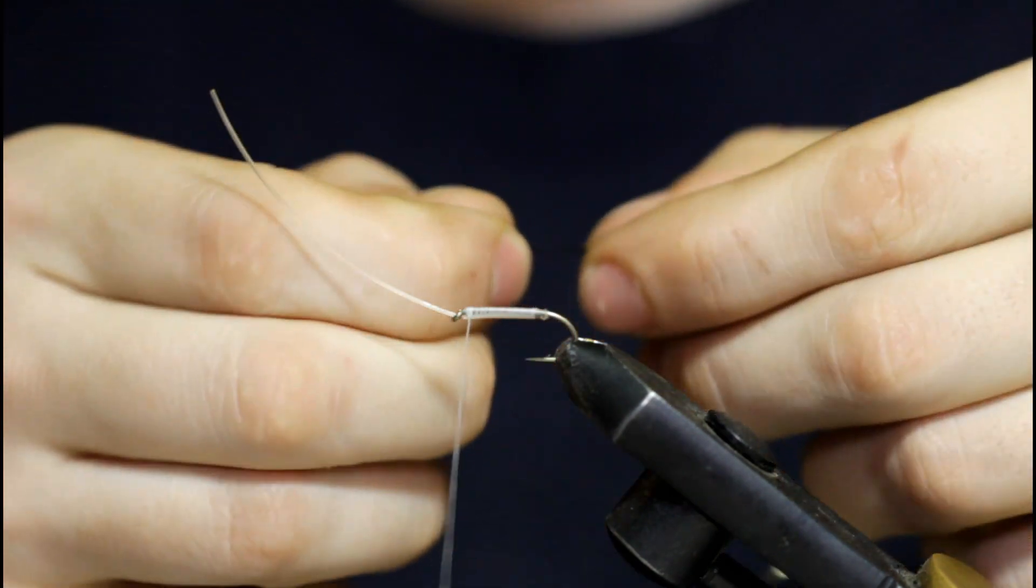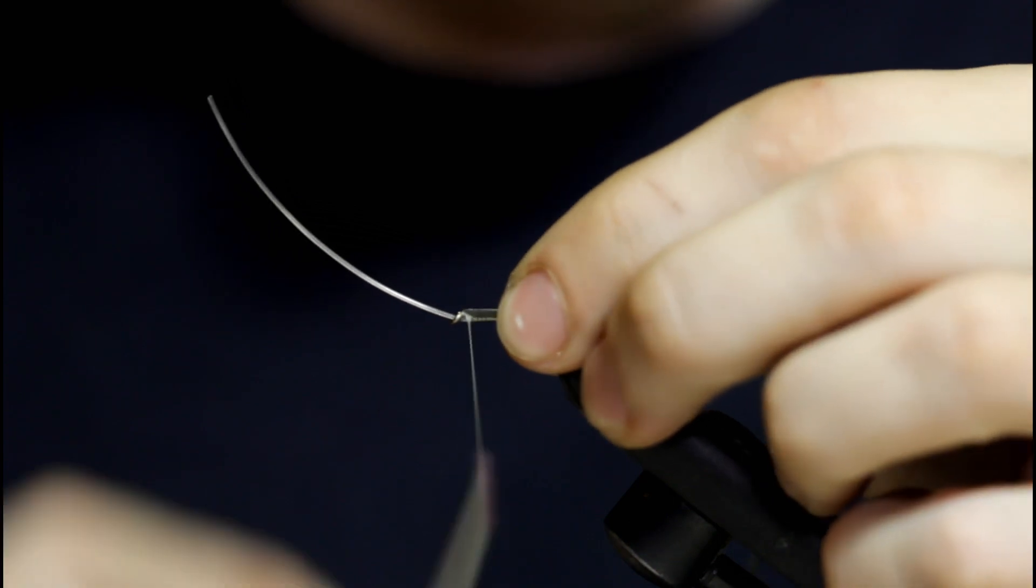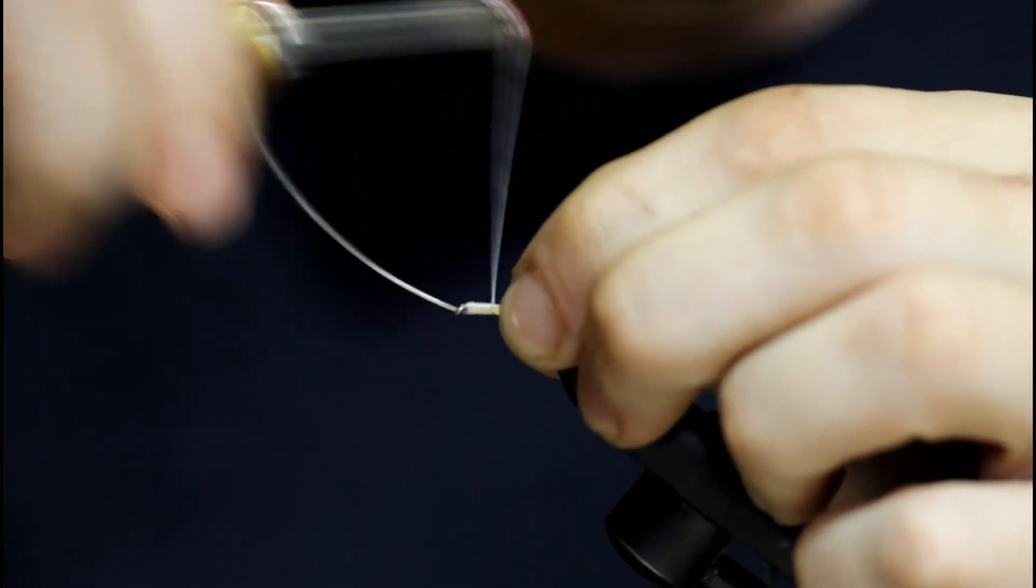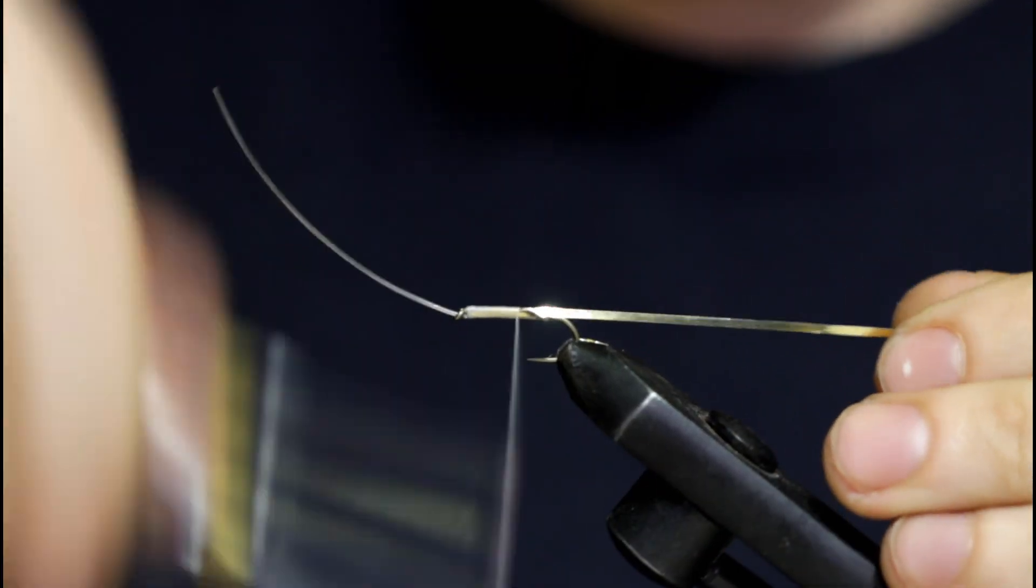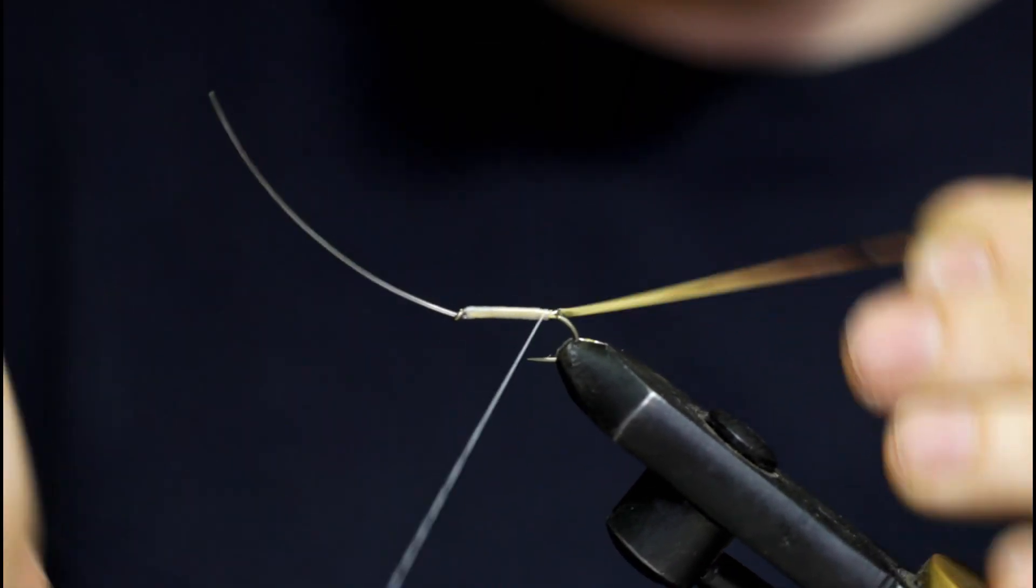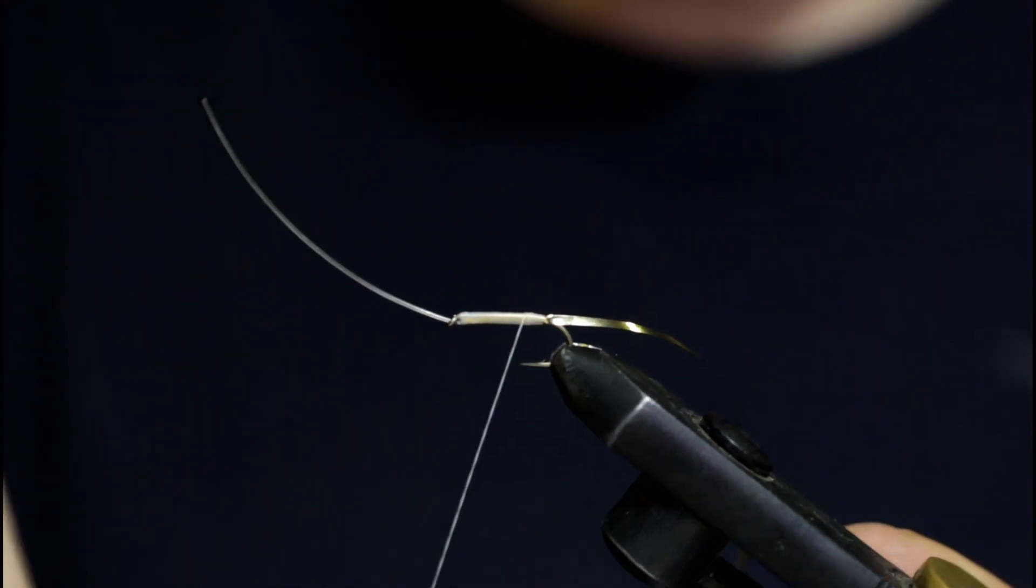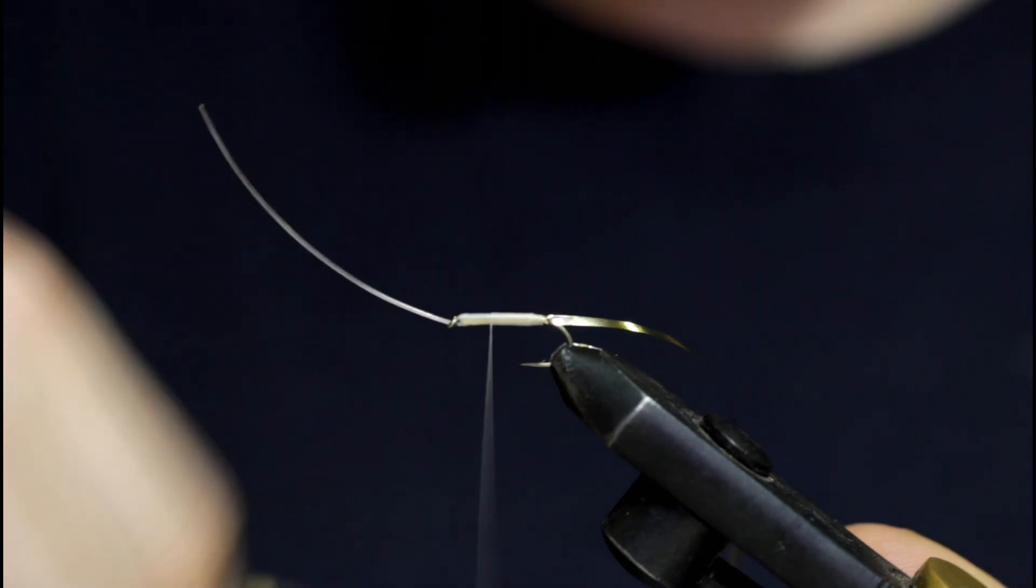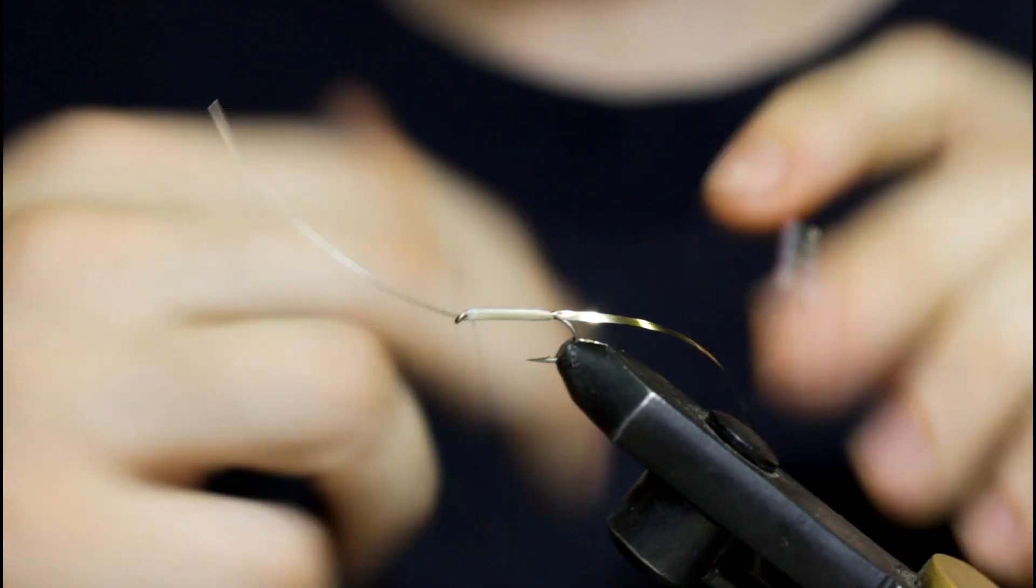I'm going to grab some silver tinsel. I'm going to tie this in at the hook eye, all the way down. Now I'm going to advance the thread all the way to the hook eye. Taking tight turns here to really bind the monofilament to the hook.